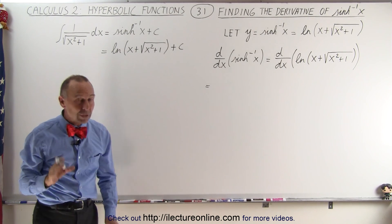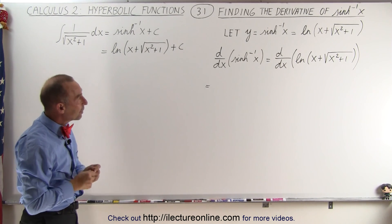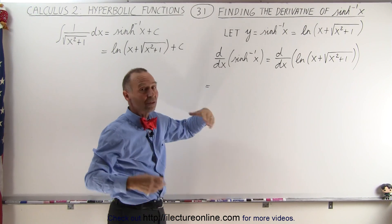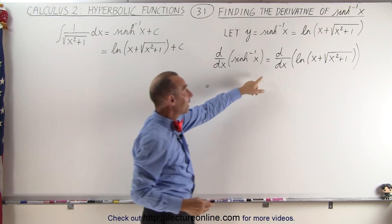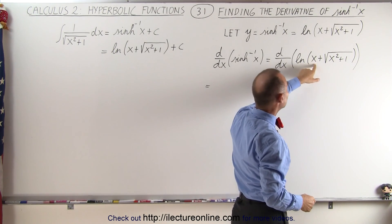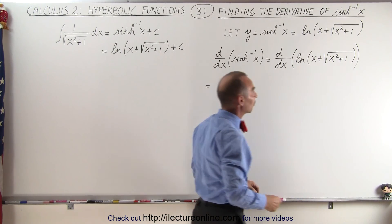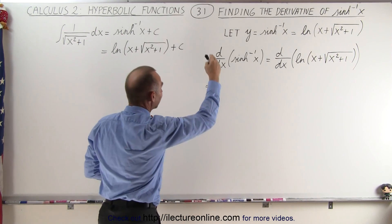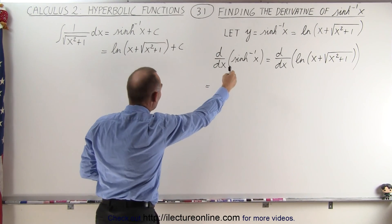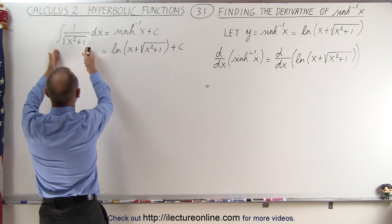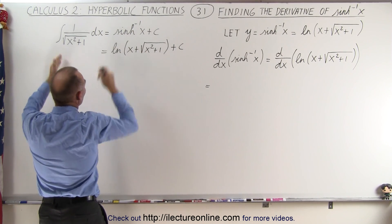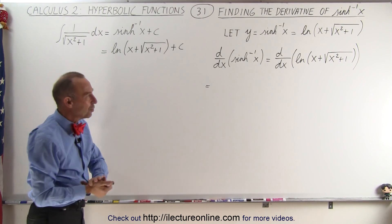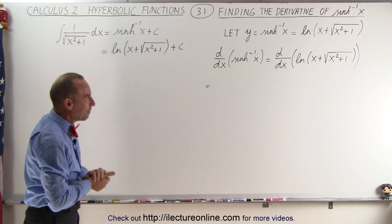So what we're going to do here is take the derivative of the inverse hyperbolic sine, which is defined as the natural log of the quantity x plus the square root of x squared plus 1, and show that by taking the derivative, we can see that this is the integral we can solve by using the inverse hyperbolic sine. Stay tuned and you'll see what I mean.